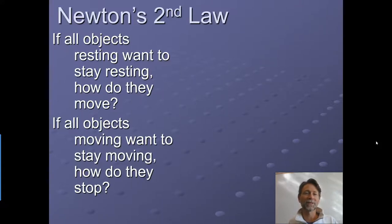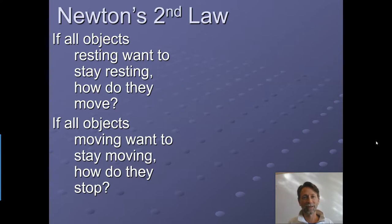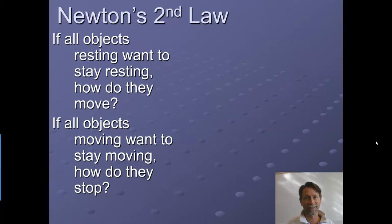Hey, future physicists. So we're looking at Newton's second law. In the last video, we talked about Newton's first law. Remember, objects in motion tend to stay in motion in a straight line at a constant speed, unless acted on by an outside force. And objects at rest tend to stay at rest, unless acted on by an outside force.